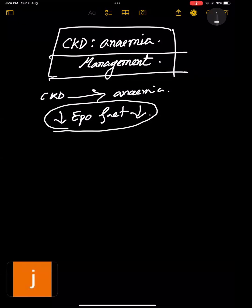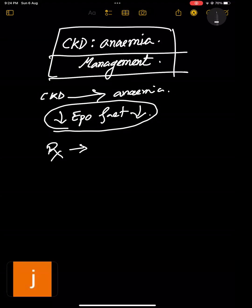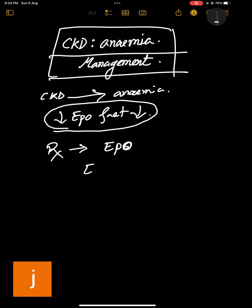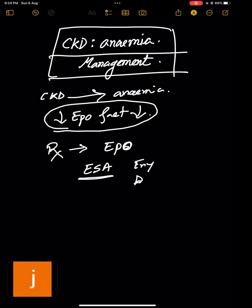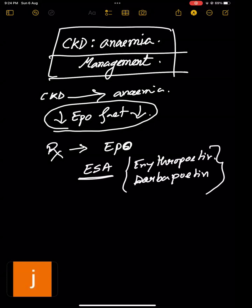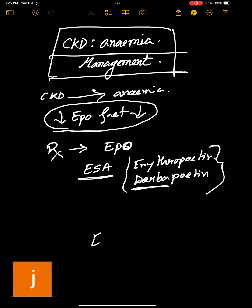How do you treat it? Since erythropoietin deficiency is the main cause, you give erythropoietin - also called ESA, erythropoietin stimulating agent. You can give erythropoietin or darbepoetin, which is a newer agent. These are all erythropoietin stimulating agents. You need to know these names.